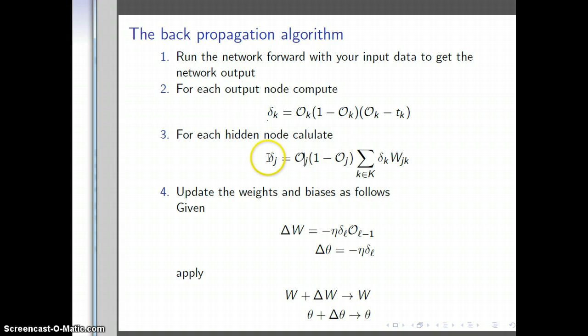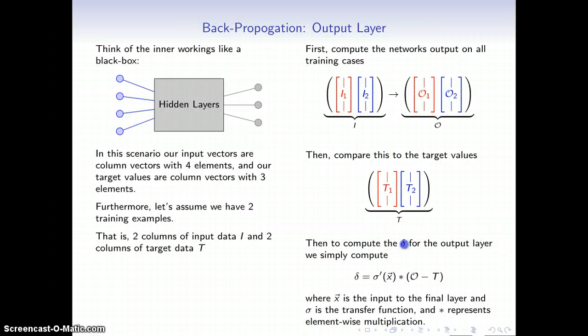For all the hidden nodes, we're going to go through and compute little delta for each one of those. Once we're done with that, we have to compute the actual weight delta, which we get by looking at the product of the little deltas with the outputs from the previous layer. But right now, we're focusing on the little deltas. Don't get confused between the weight delta, the change in the weights, and this little delta that I'm talking about right now.